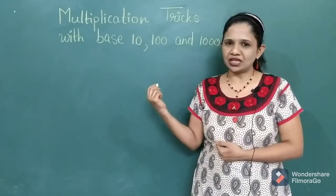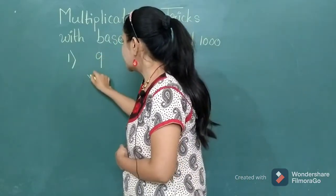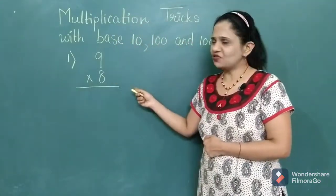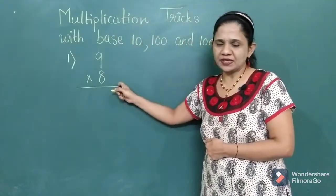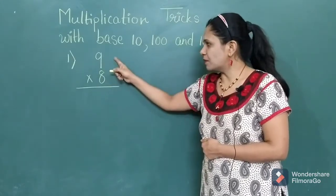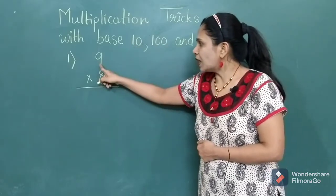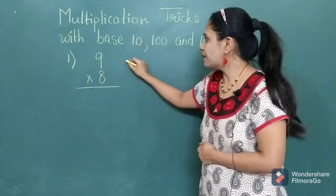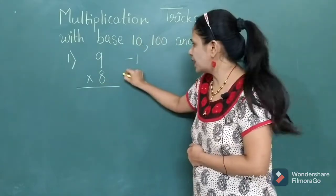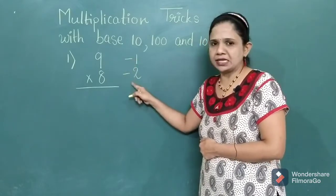We will start with one-digit numbers first. Suppose you want to multiply 9 by 8. So how will you apply today's trick to solve such examples? Now what is the base number for these two numbers? The base number is 10. Now 9 is less than 10 by 1, and 8 is less than 10 by 2. It's less than, because of that I am using a minus sign.